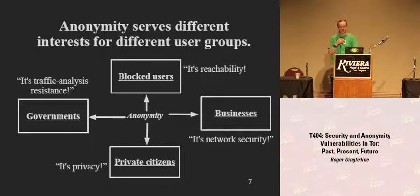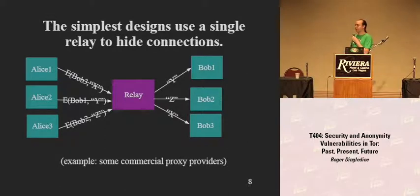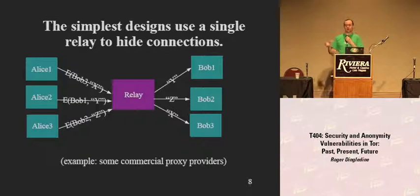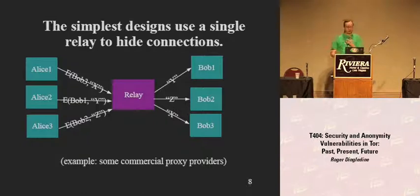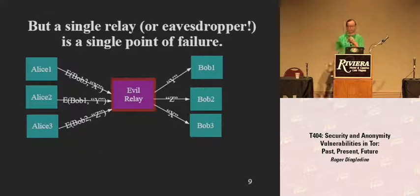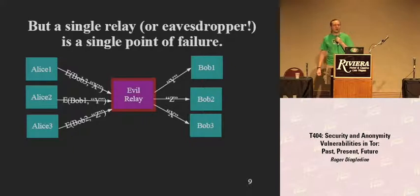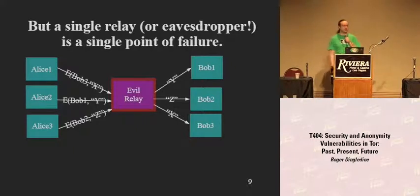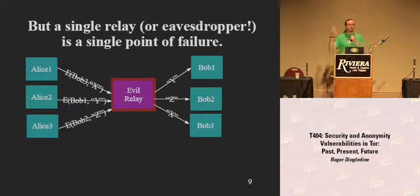How do you build one of these? The easy answer is you put a relay somewhere and everybody relays through it — Alice 1, Alice 2, Alice 3 all show up and say give me this website, and the relay fetches it. But what if there's a bad guy anywhere? Maybe there's a compromised relay, somebody's wiretapping it, you bribe the CEO, you threaten the CEO. The list of ways to attack a single point goes on and on.